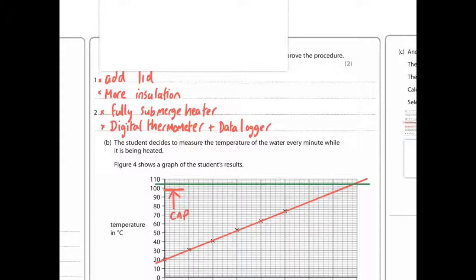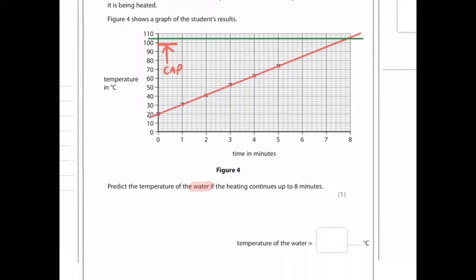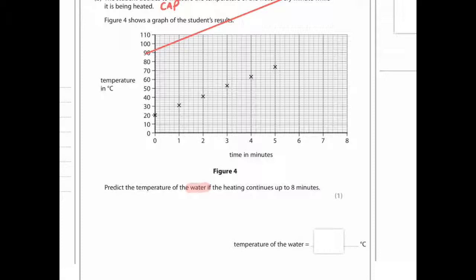The student decides to measure the temperature of the water every minute while it's being heated. Figure 4 shows the graph of the student's results. So let's just move down here. So it says, predict the temperature of water if the heating continues up to 8 minutes. Now this is a bit of a trick question, but I'll show you how normally you do something like this. So you've got plots here showing a very clear positive trend.